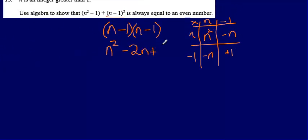So the expression in total here is n² minus 1 plus (n - 1)² which becomes n² - 1 + n² - 2n + 1.